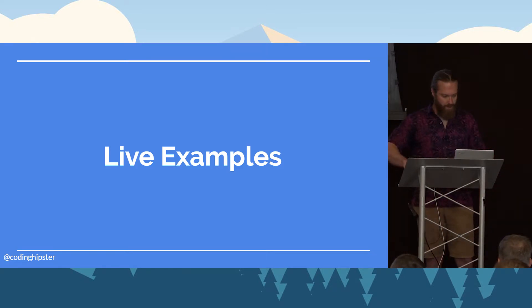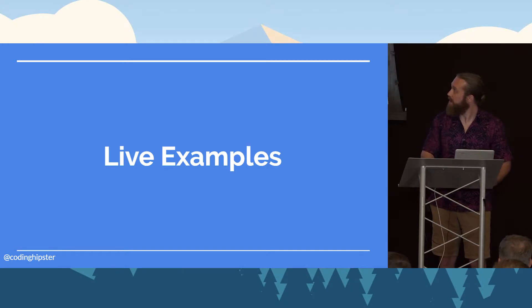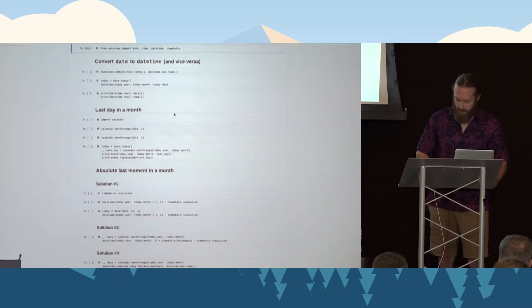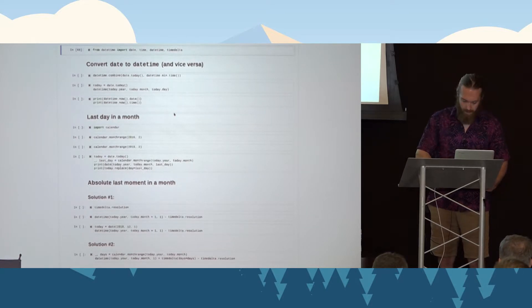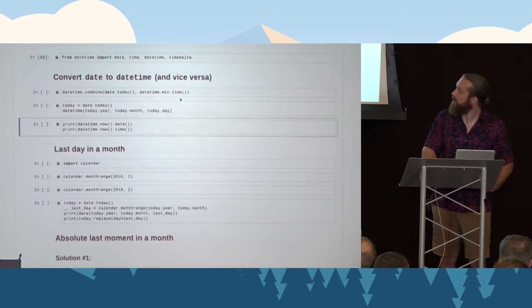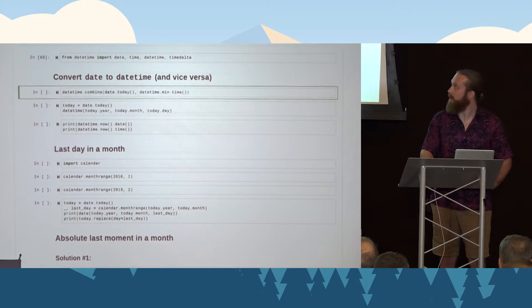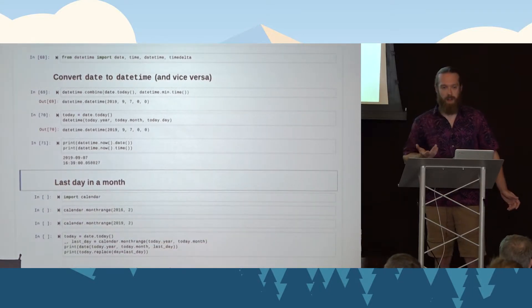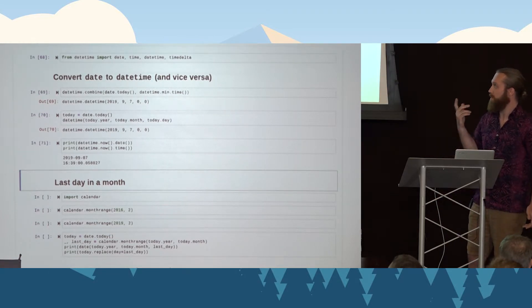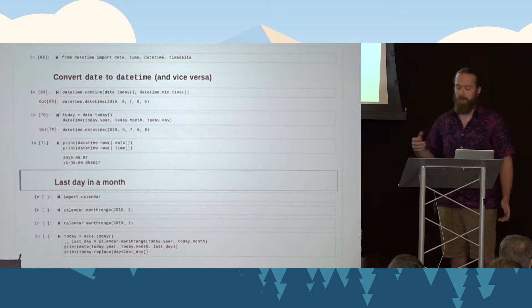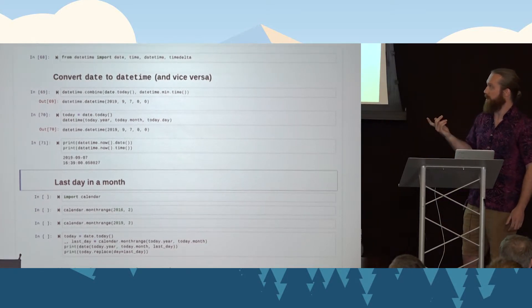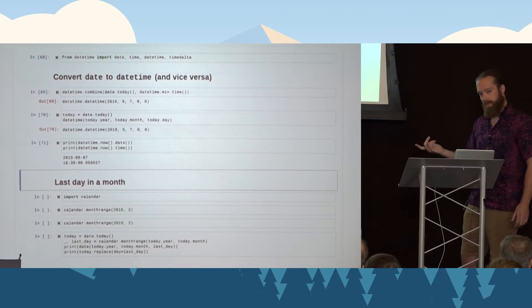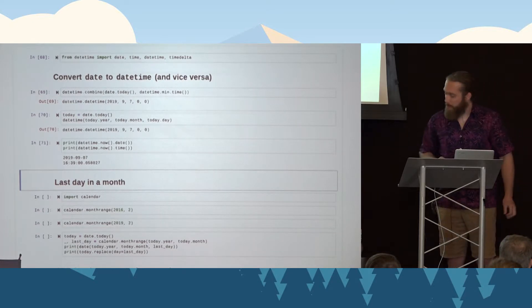So with that, I figured I would jump into a couple live examples to demonstrate some of these things. Okay. So the first example here, just converting a date to a date time. As you can see, you can create date time with just year, month, day, and it gives you date time. There's also a couple of nice helpers for date time objects, date and time, if you want to go the one way or the other.